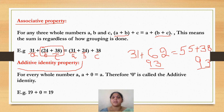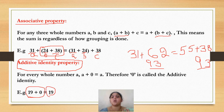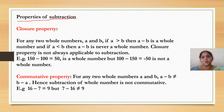The next property is the additive identity property. For every whole number, A plus 0 is equal to A. Therefore, 0 is called the additive identity. For any whole number, if you add 0 to it, you will get the same number. So 0 is called the additive identity of the numbers.